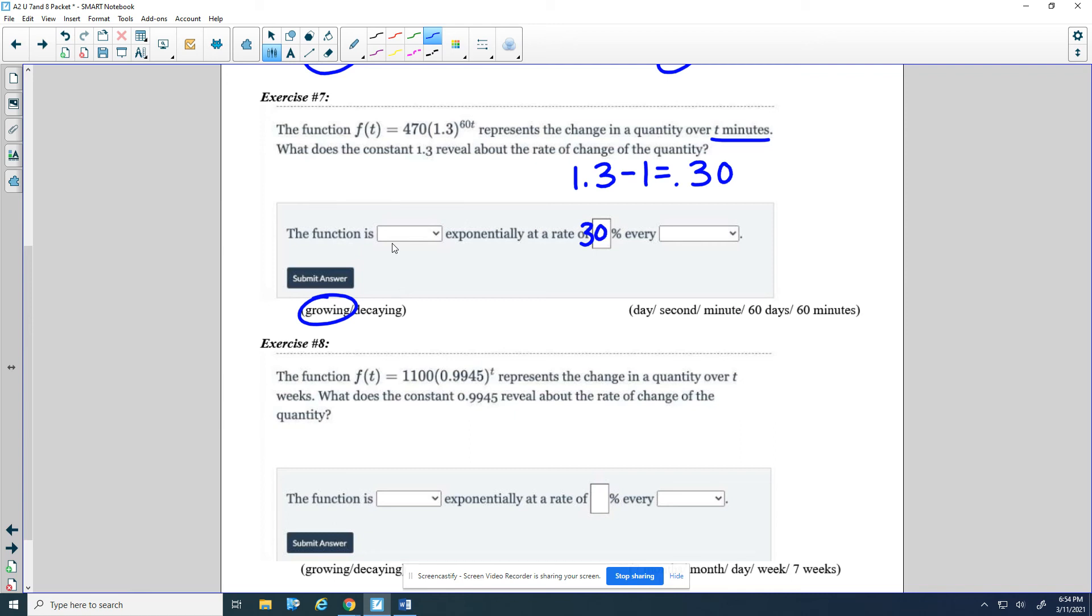Now, we are talking about minutes, but we're happening more often, 60 times more often. So 60 times more often than a minute is a second, because there's 60 seconds in a minute.